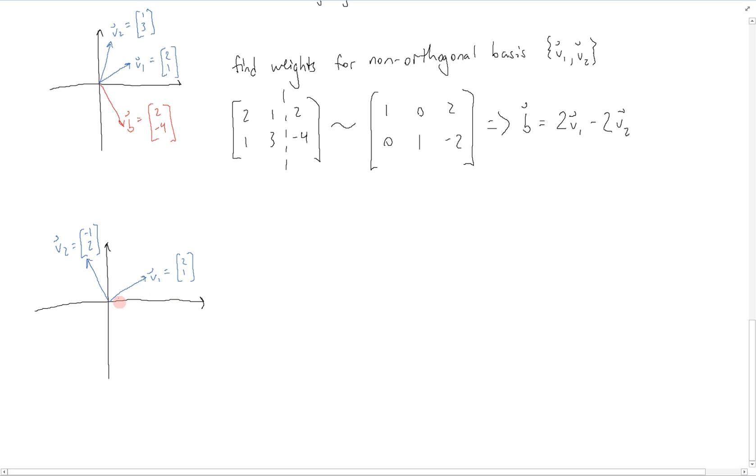We're still trying to get to the same vector B, which is equal to 2, negative 4. Using what we just saw, we're still trying to find B equals C1V1 plus C2V2. But now we know that C1 is equal to B dot V1 divided by V1 dot V1, which is equal to, as we saw before with the inner product, it's going to be this,